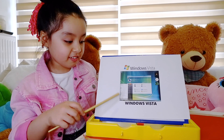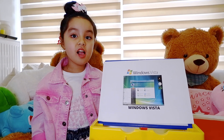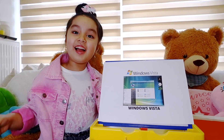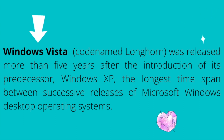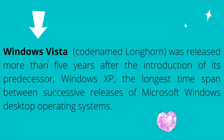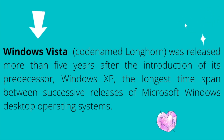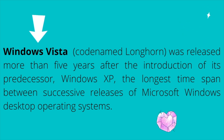The next version of Windows is Windows Vista. Windows Vista, codenamed Longhorn, was released more than five years after the introduction of its predecessor, Windows XP — the longest gap between successive releases of Microsoft's Windows desktop operating system.